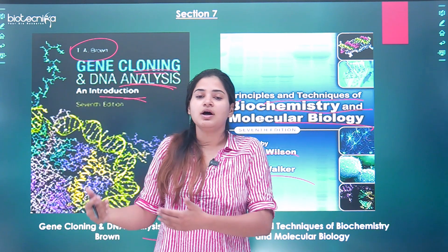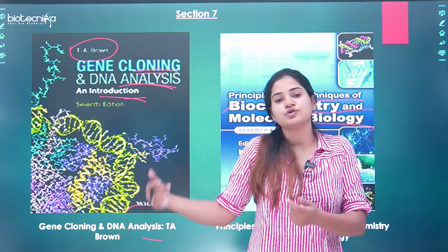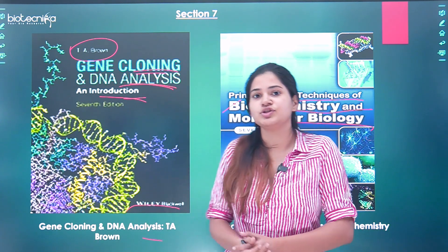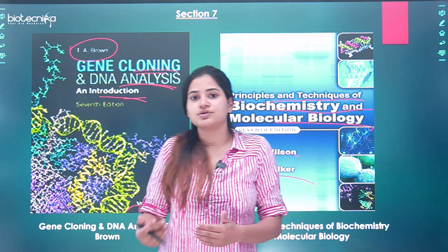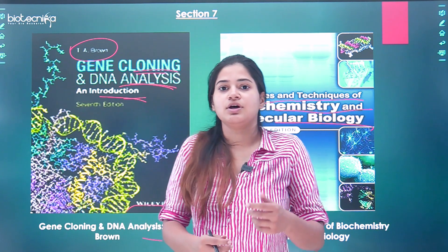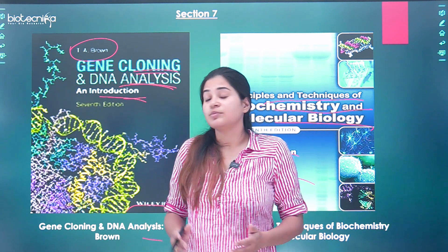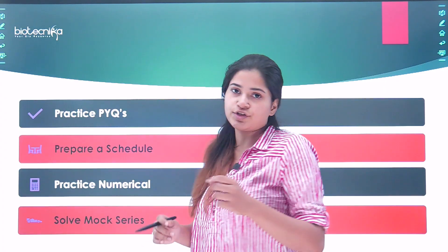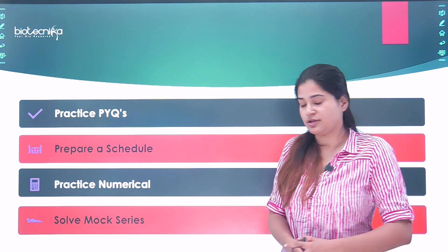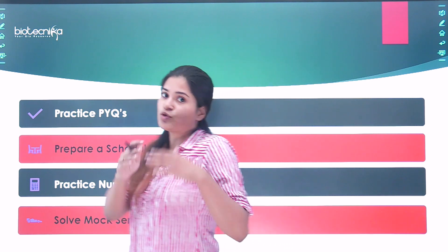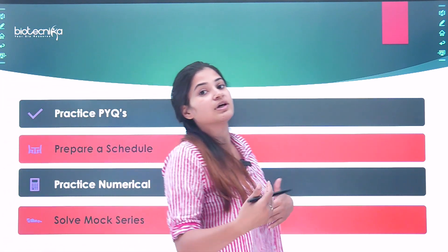Additionally, you can refer to standard books such as Lehninger, Sambrook, and Lewin's Genes 12, according to your need and interest. You should feel interested in reading those books. These are the books I recommend for your preparation for the GATE BT examination coming in February. But beyond those standard books, there are certain other things you should also refer to.